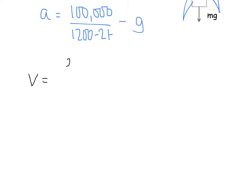So it's going to be the integral. Now, we wanted it for 10 seconds, so we're going to do it between 0 and 10. 100,000 over 1,200 minus 2t minus g, and we're going to integrate it with respect to t. Now,